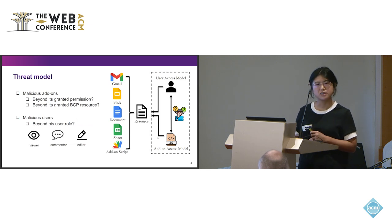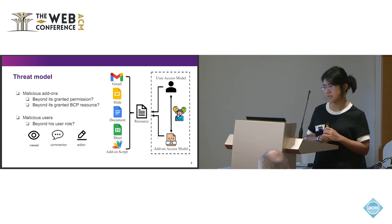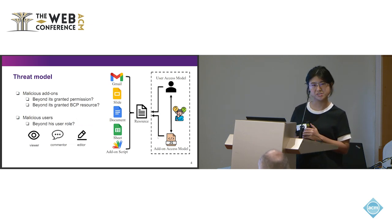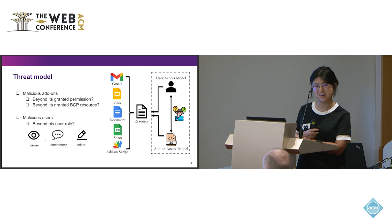And what's our definition of the threat model? So what if the users are malicious? Can user play more beyond his user role? Like if a viewer of the Google Doc can actually edit or comment to the Google Doc, this is absolutely a permission escalation. And the second is that what if the IDAM is malicious and can do more beyond its granted permission or do more beyond its granted BCP resources?